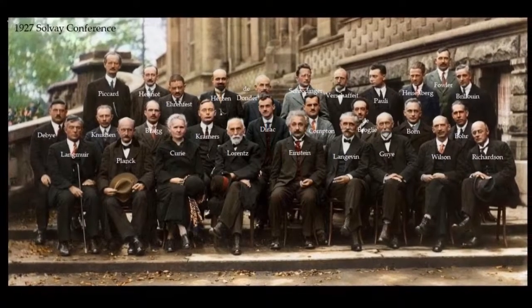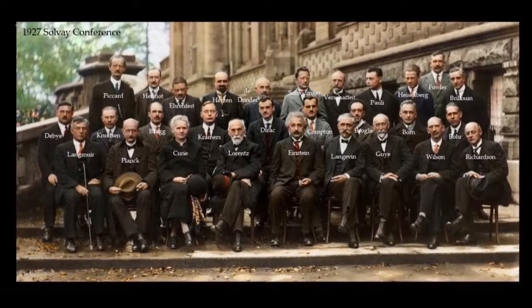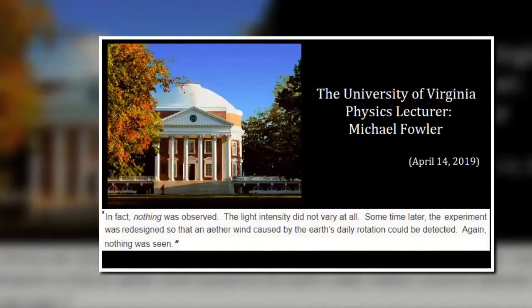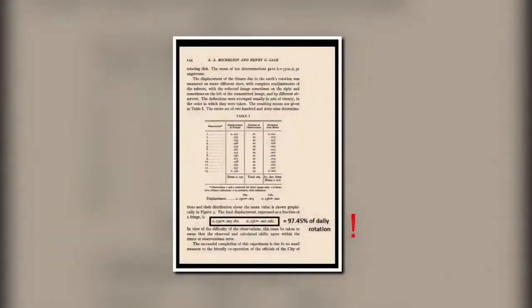It is not surprising, then, that nearly the whole scientific community virtually ignored the results of Michelson's 1925 experiment. Some, even today, try to dismiss it, as is the case in a recent physics lecture at the University of Virginia, which says, Some time later, the experiment was redesigned so that an aether wind caused by the Earth's daily rotation could be detected. Again, nothing was seen. But detect the aether, in 1925, Michelson surely did, and he proved by his light-wave interference fringes, at least modern science could account for a daily relative rotation between the Earth and the Universe, but not a revolution of the Earth around the Sun.